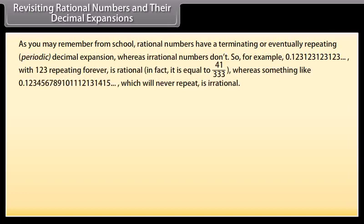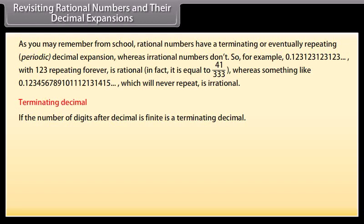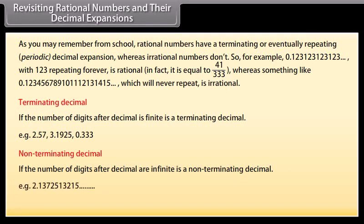Revisiting rational numbers and their decimal expansions. Rational numbers have a terminating or eventually repeating (periodic) decimal expansion, whereas irrational numbers don't. For example, 0.123123123... with 123 repeating forever is rational — in fact it equals 41/333. Whereas something like 0.123456789101112131415... which will never repeat is irrational. A terminating decimal has a finite number of digits after the decimal point, for example 2.57, 3.1925, or 0.333. A non-terminating decimal has infinitely many digits after the decimal point.